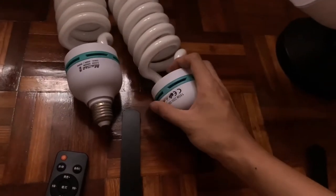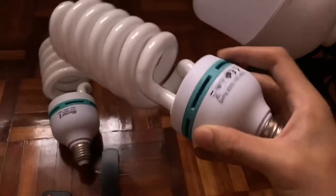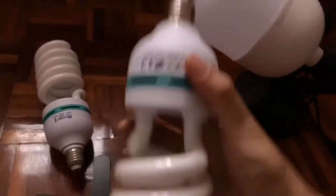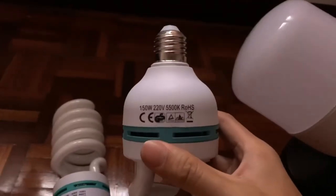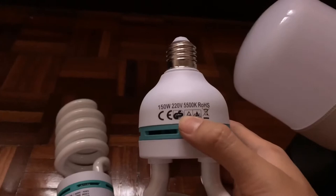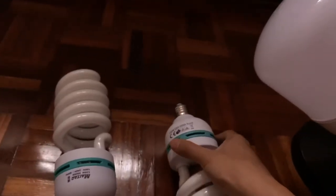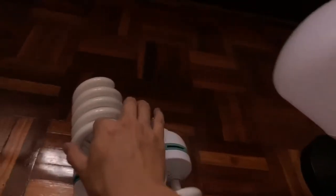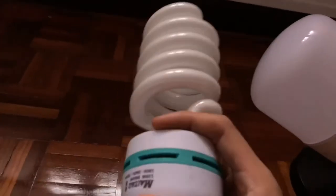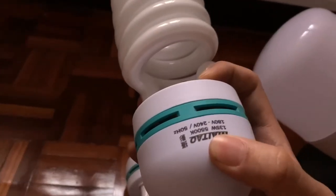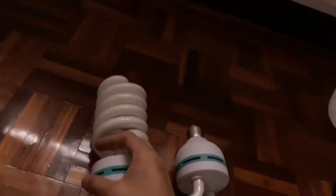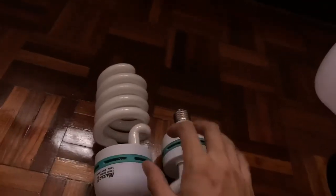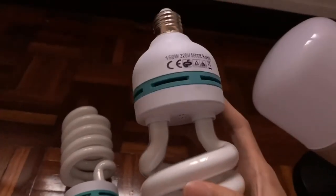And I just want to show you these two bulbs. When I first started my company, my business, I started by selling this kind of lighting kit. This is composed of these kind of bulbs. This is a 135W fluorescent bulb. Later, I upgraded to this 150W one.